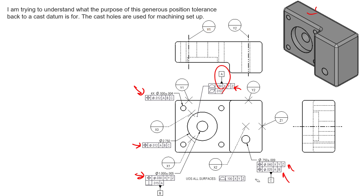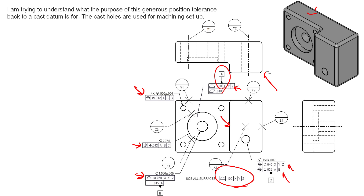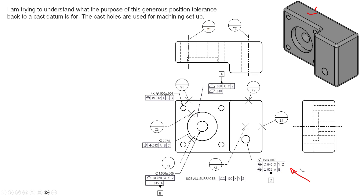Anything you want to control back to the cast surfaces of X, Y, and Z, you can still do that. Maybe this stepped surface is one you don't really care about its location relative to the machined features — you can control it as a cast surface with its location back to X, Y, and Z only, not necessarily back to A, B, and C. There are many ways to do this — you can start out simple and add things — but this is the most complete approach: giving manufacturing maximum tolerance where possible and only controlling location where it's necessary.